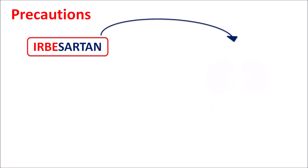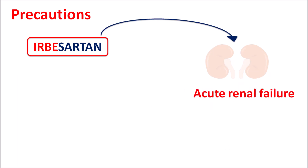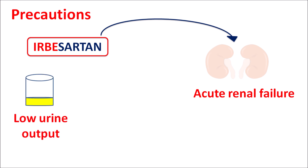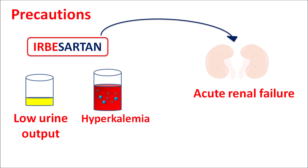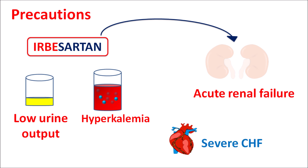This drug can also cause acute renal failure, producing low urine output resulting in oliguria, and can reduce potassium excretion resulting in hyperkalemia. This acute renal failure produced by Irbesartan is more pronounced in patients with severe congestive heart failure, where hyperkalemia and other complications are more severe. In such patients, Irbesartan should be used carefully.